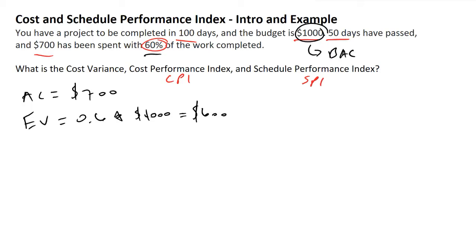Next, we have another term called planned value. Planned value will be equivalent to the percentage that should be completed per the schedule times the budget at completion. In this case, because we're at day 50 and we know that our project was supposed to last 100 days, that means we should be at least 50% of the way done with this project. We're going to be multiplying this figure by the budget at completion, that $1,000.